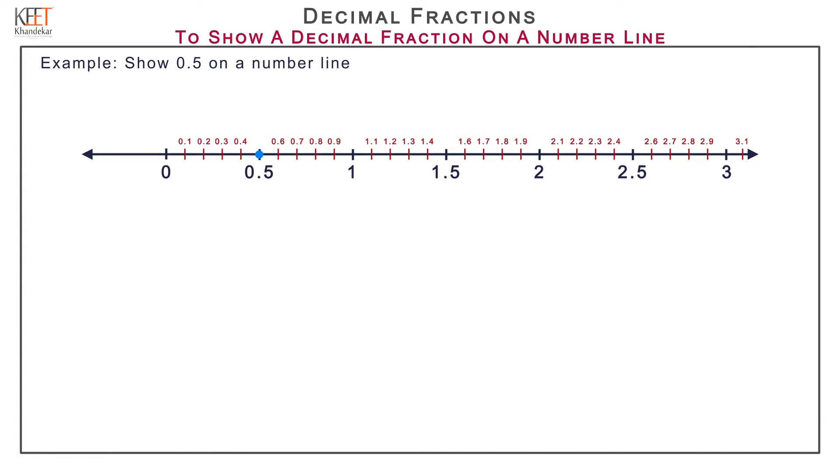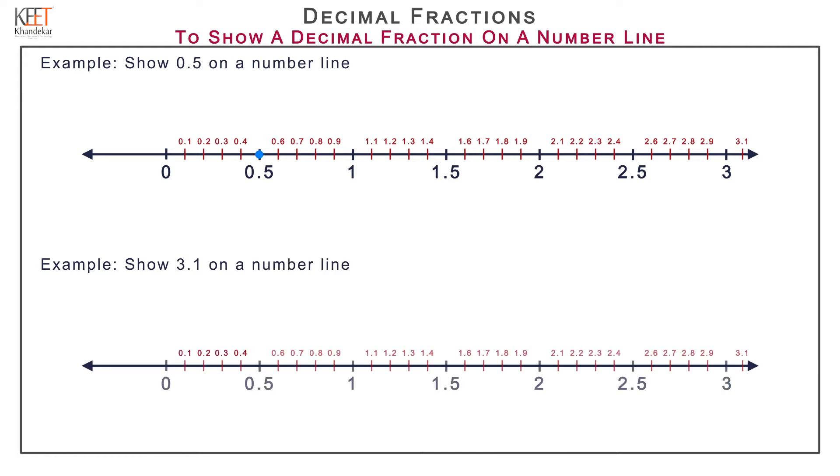Take one more example. Show 3.1 on a number line. Draw a calibrated number line. To plot 3.1 on the number line, start from 3 and count up to 3.1. And mark 3.1 as shown on the screen.